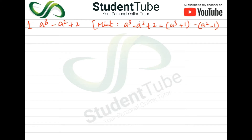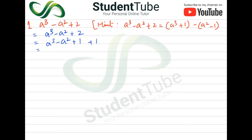The hint is that the question is equal to a³ plus 1 minus a² minus 1. So we rewrite a³ minus a² plus 2 as a³ plus 1 minus a² plus 1, which gives us a³ plus 1 minus a² plus 1.